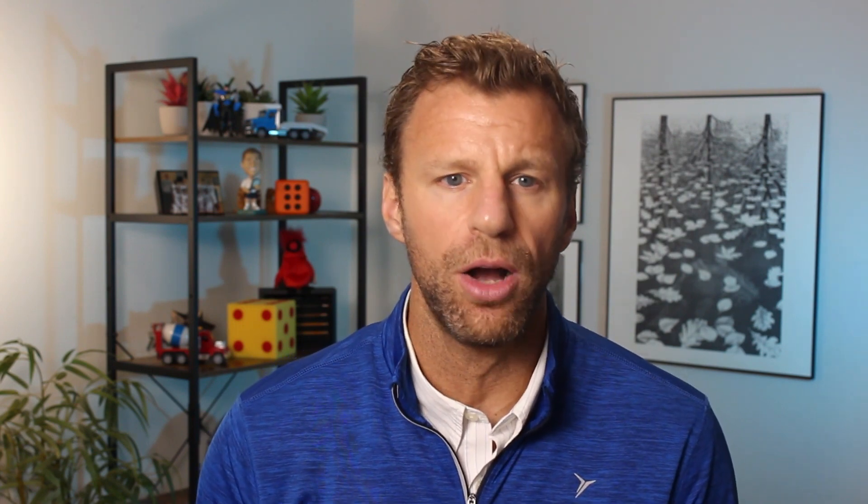The mean could be higher or lower, which would move the normal model up or down. The standard deviation could also be higher or lower, which would simply spread the normal model out more or less, making it more narrow. Here we see two normal models sharing the same mean of 24, but the one in red has a standard deviation of two, making it much more narrow than the one in blue, which has a standard deviation of six. We can see how the spread changes as the standard deviation gets smaller or larger.